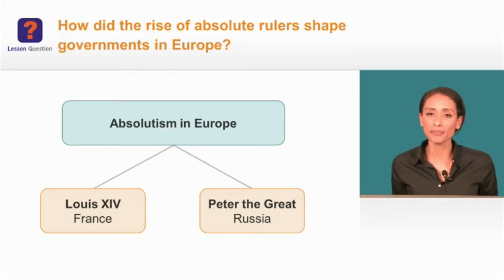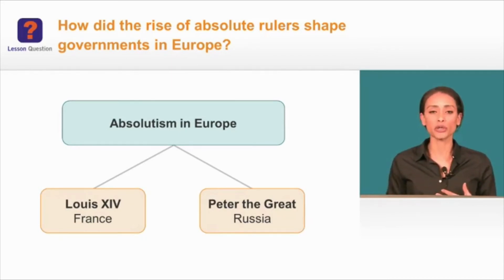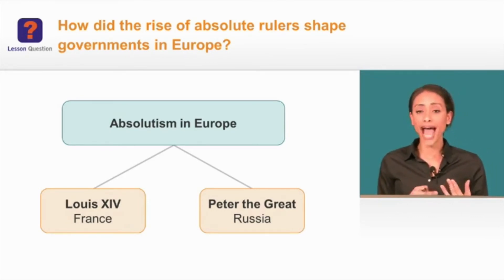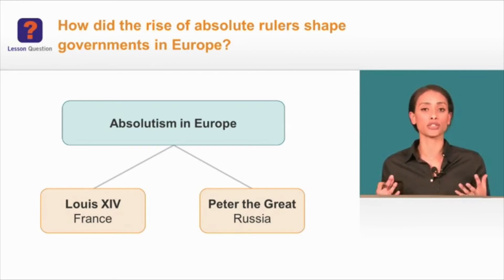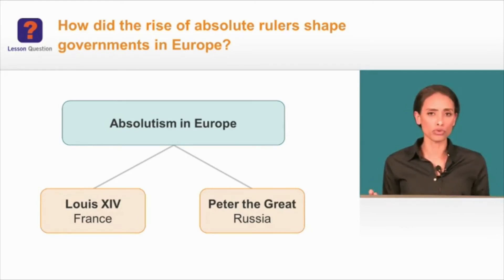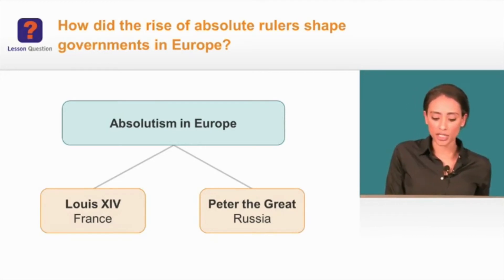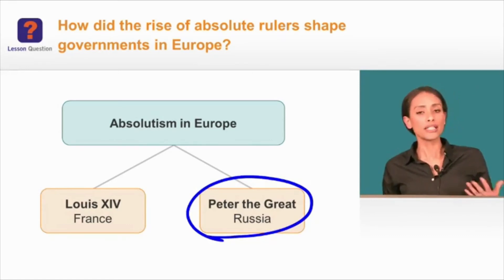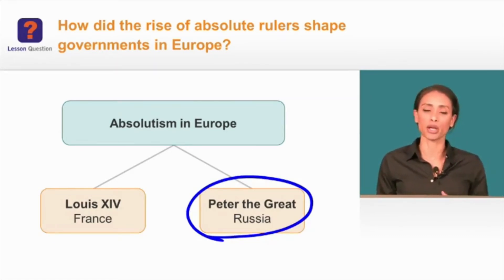How did the rise of absolute rulers shape governments in Europe? To this point, we've learned about Philip II of Spain and Louis XIV of France — two absolute rulers who used tax collection to build large standing armies and, as divine rulers, took the opportunity to persecute non-Catholics. Now we're going to look at how Russia and their version of absolute rule differed and compared to other European countries.